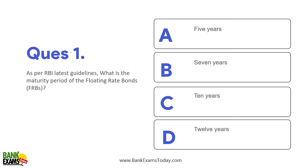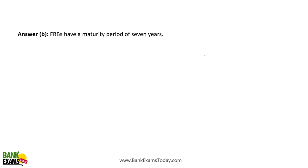Question number one: as per the latest RBI guidelines, what is the maturity period of floating rate bonds? As per the RBI guidelines, the maturity period is 7 years. 7 years is the maturity period for floating rate bonds. Please remember that — it's a long time, but the important factor is just that it's a 7-year maturity period.